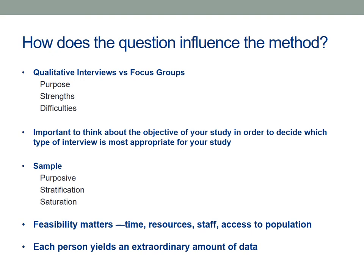The same applies to your interviewer — having someone from the community may be more appropriate because people are more likely to open up, or it could be the case that the community member is too closely identified and people won't disclose. At the end of the day, feasibility really matters — limited time, resources, staff, and access to the population. The great thing about qualitative data is that each person yields an extraordinary amount of data, so you can hopefully reach thematic saturation with a smaller sample.